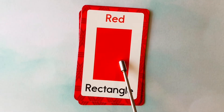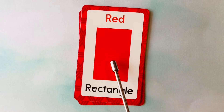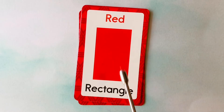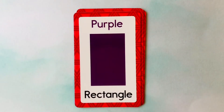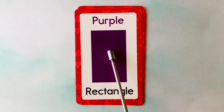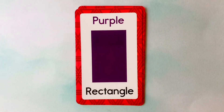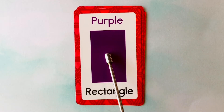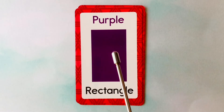This is a rectangle. What color is this rectangle? It's a red rectangle. This is a red rectangle. This is also a rectangle. What color is this rectangle? It's a purple rectangle. This is a purple rectangle.